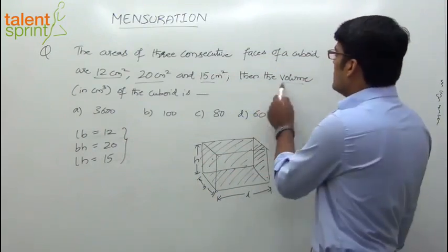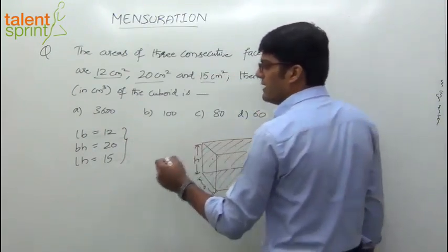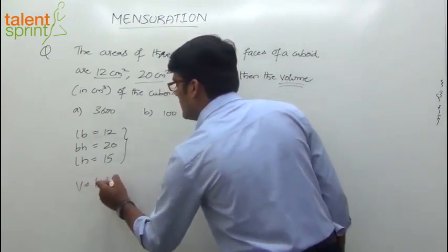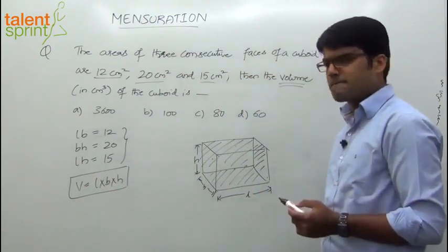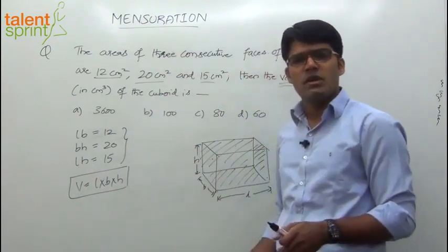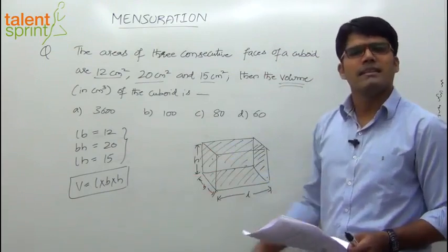We need to find the volume. Volume of a cuboid equals length into breadth into height, L into B into H. So to get the volume, you need to know length, breadth, and height. Three equations, three variables can be solved to get each of those values, and then you can get the volume.